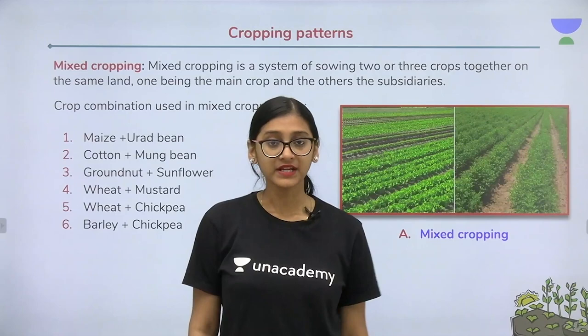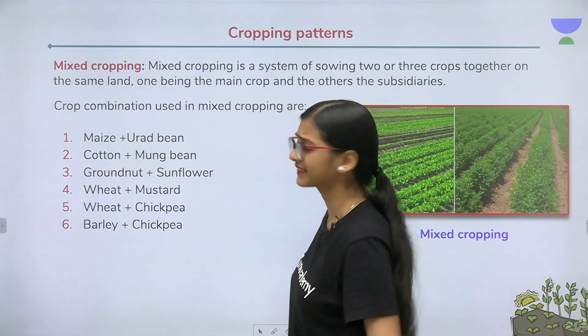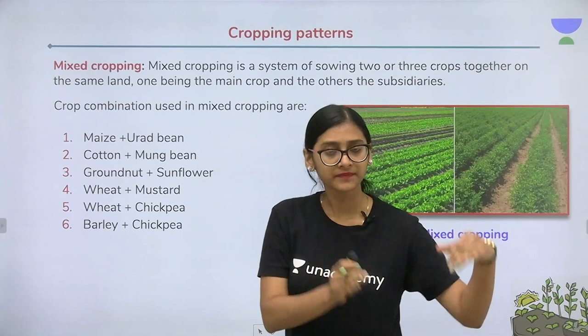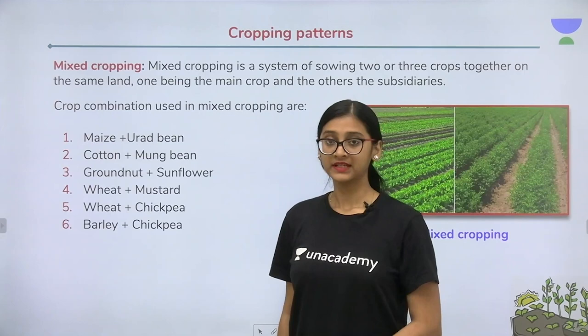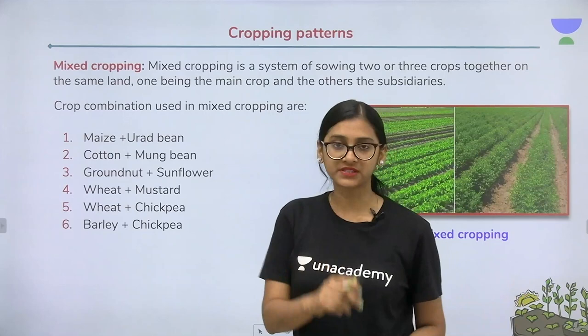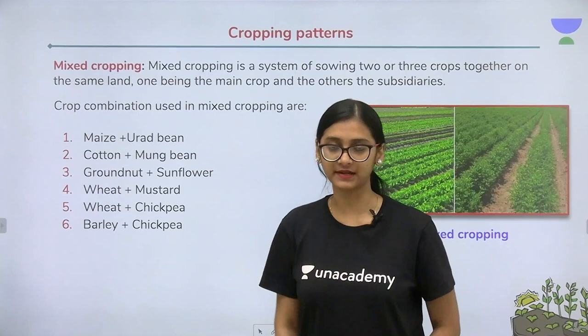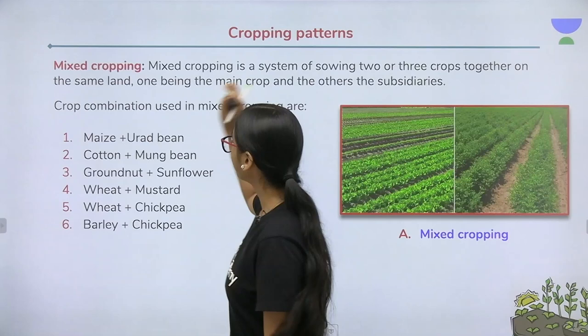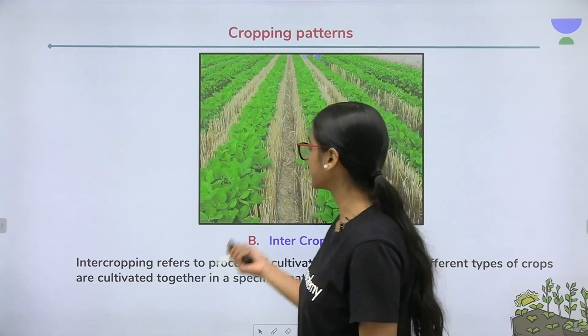We have already discussed mixed cropping and mixed farming in our previous class. Mixed cropping is a system of sowing different crops in one particular place. By following this type of cropping, the chance of getting higher yield increases and the chance of crop failure is quite less, because in one area we grow many crops together.